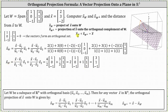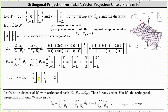Now we can find the projection of vector x onto the orthogonal complement of W by determining vector x minus vector x sub W. That is (2, 3, -2) minus (3, 1, -1). Subtracting, the projection of vector x onto the orthogonal complement of W is the vector (-1, 2, -1).